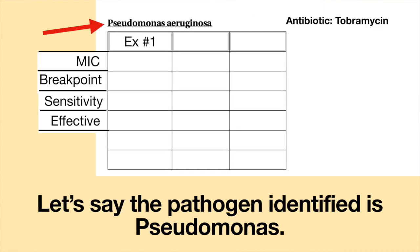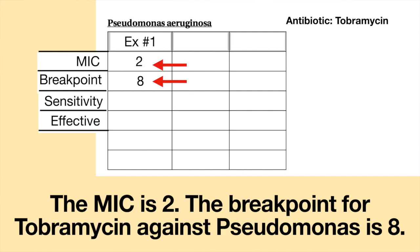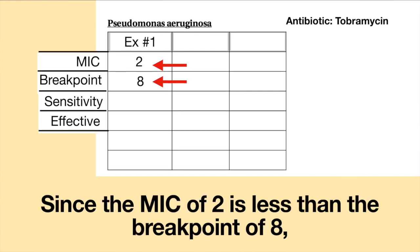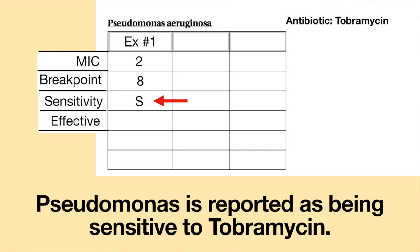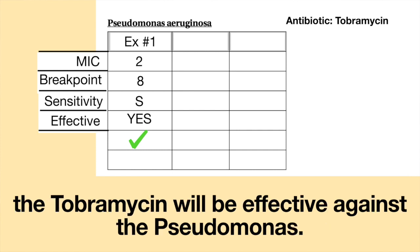Example number one: the pathogen identified is Pseudomonas. Tobramycin is tested against this strain of Pseudomonas. The MIC is two. The breakpoint for Tobramycin against Pseudomonas is eight. Since the MIC of two is less than the breakpoint of eight, Pseudomonas is reported as being sensitive to Tobramycin. If you give the patient Tobramycin for a Pseudomonas infection, the Tobramycin will be effective against the Pseudomonas.